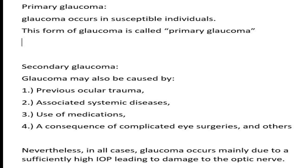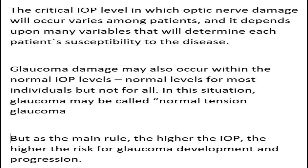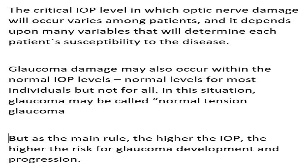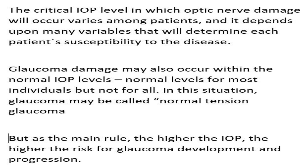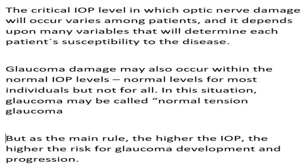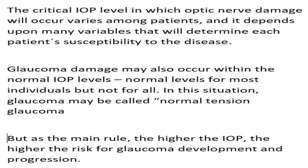Nevertheless, in all cases, glaucoma occurs mainly due to a sufficiently high intraocular pressure leading to damage to the optic nerve. The critical intraocular pressure level at which optic nerve damage will occur varies among patients, and it depends upon many variables that will determine each patient's susceptibility. In other cases, intraocular pressure may be relatively normal but glaucoma occurs anyway, because of the inability of the eye to handle mechanical stress where the nerve fibers leave the eye, or because of poor blood supply to those nerve fibers. In this situation, glaucoma may be called normal tension glaucoma. But as the main rule, the higher the intraocular pressure, the higher the risk for glaucoma development and progression.